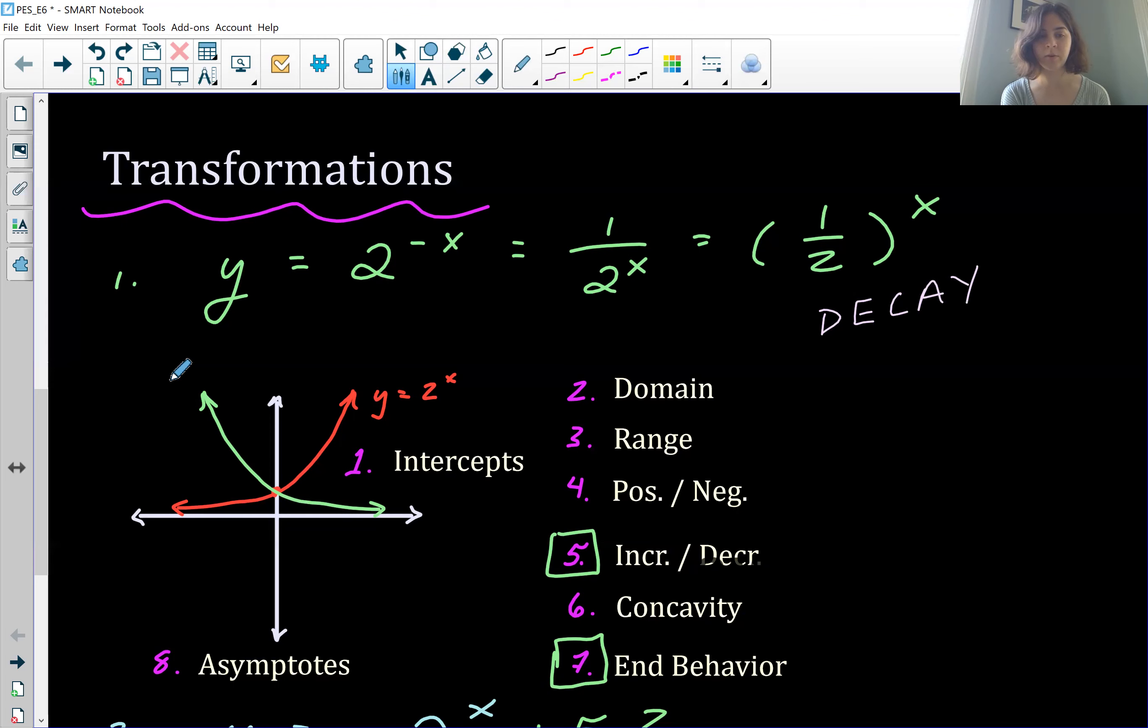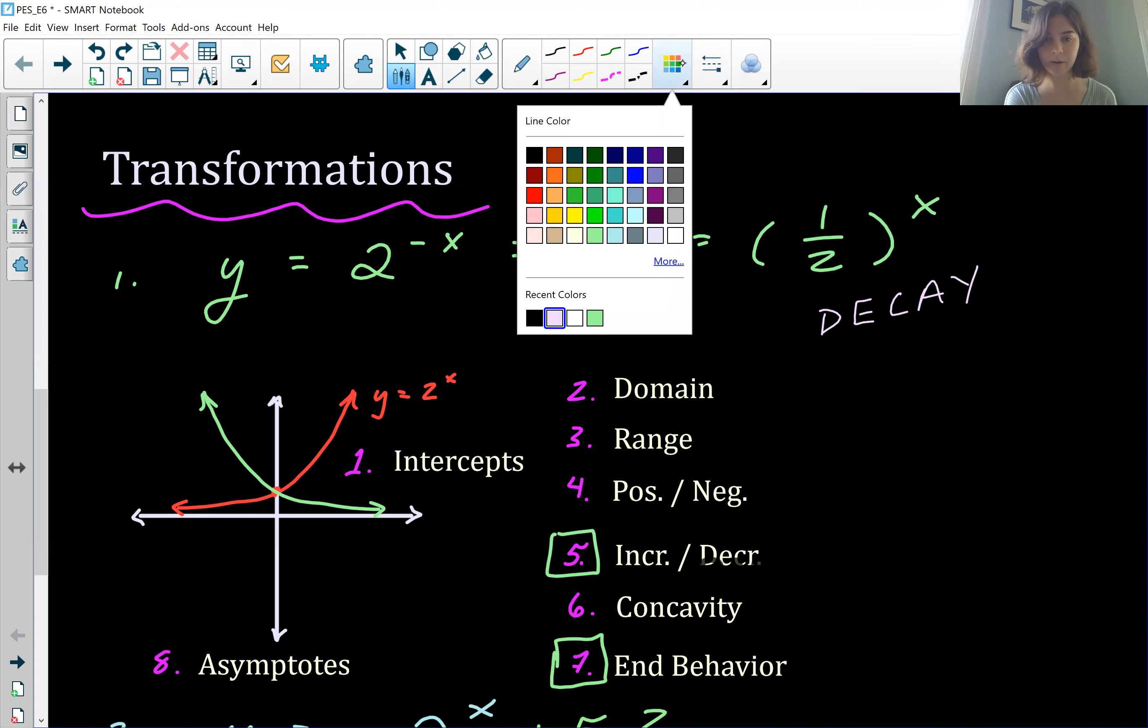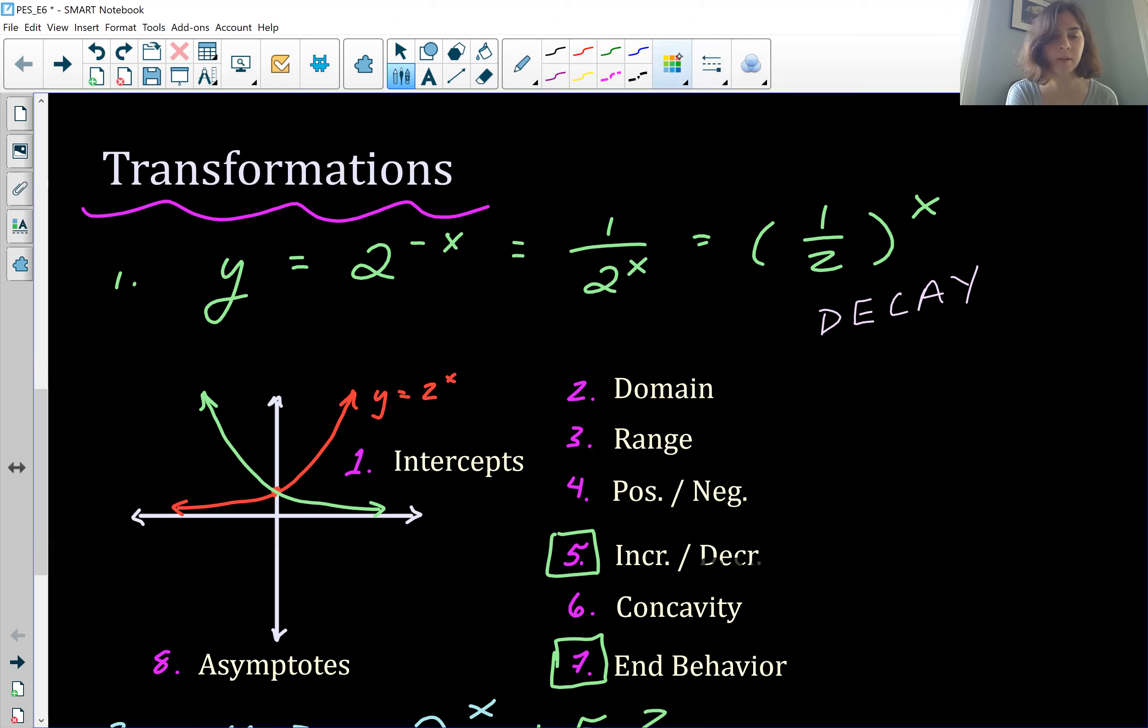Positive and negative, it's still above the x-axis. So that's going to be positive, and increasing and decreasing does change. So for our original graph, which is in red right here, that was always increasing. The slope was always positive. But now that we've flipped it over the y-axis, now our slopes are negative.